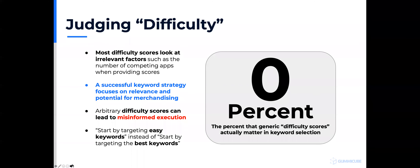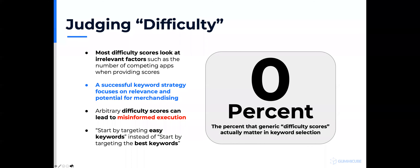Difficulty scores are also important to examine. Many tools show a difficulty score that is the same for every app looking at a keyword — an indicator that it's based on the number of apps competing for that keyword. In fact, difficulty has nothing to do with the number of apps competing. It has to do with your conversion on that keyword. If you convert very well, you will rank better than other apps — it's a literal conversion competition.